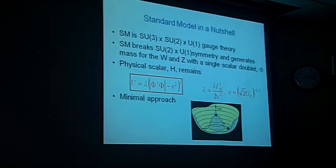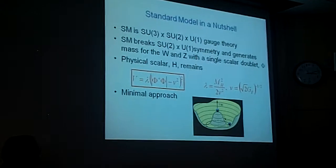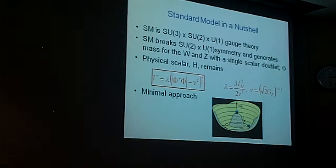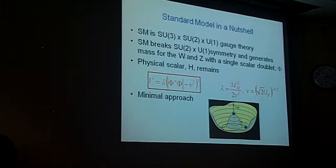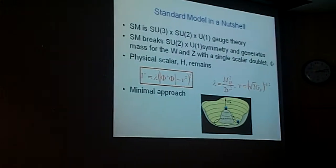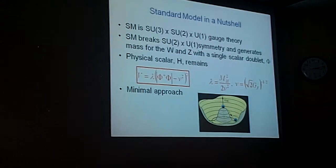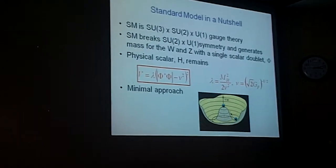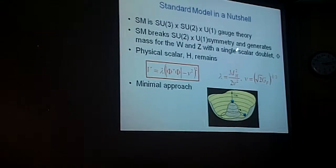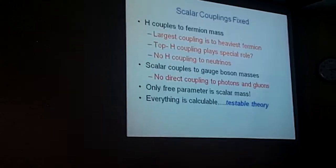The first thing to notice is the scalar potential here, which depends on the modulus of phi dagger phi, has two parameters. One I call lambda, and one I call V. V is actually measured in muon decay. It's 246 GeV, so it's not a free parameter. So lambda is the only free parameter. There's one free parameter. Lambda is actually the mass of the happy particle over 2V squared. So there's one free parameter. So this is the only free parameter in the theory. This isn't a theory with a lot of fudge factors.